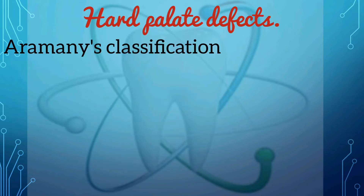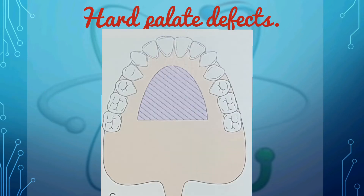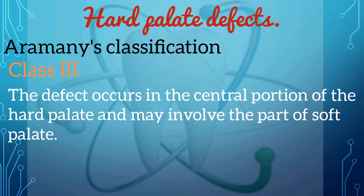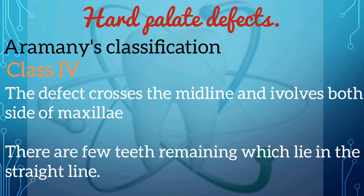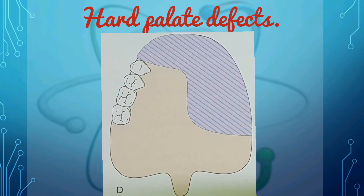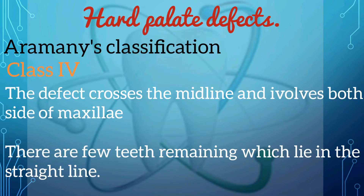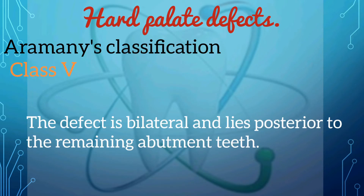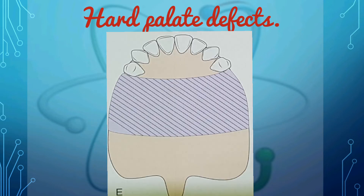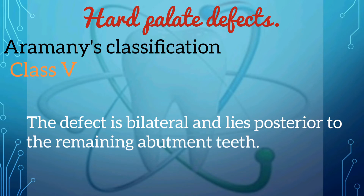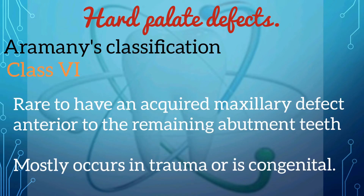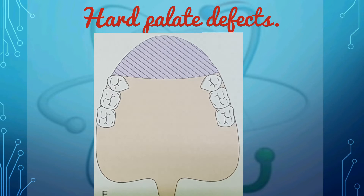In Class 3, the palatal defect occurs in the central portion of the hard palate and may involve part of the soft palate. In Class 4, the defect crosses the midline and involves both sides of the maxilla, with few remaining teeth lying in a straight line. In Class 5, the surgical defect is bilateral and lies posterior to the remaining abutment teeth.